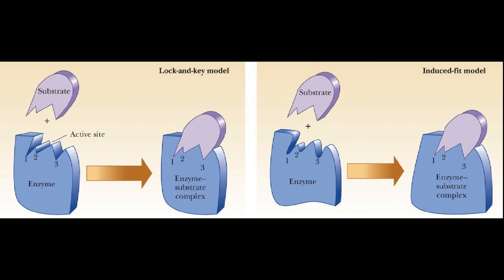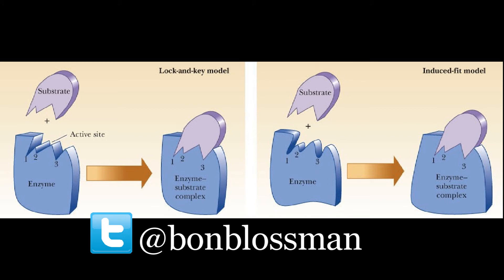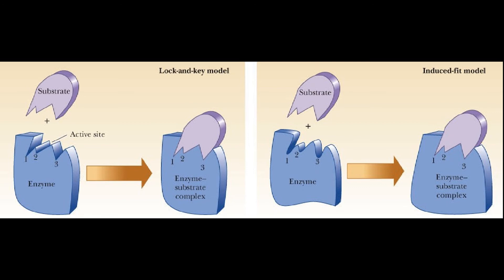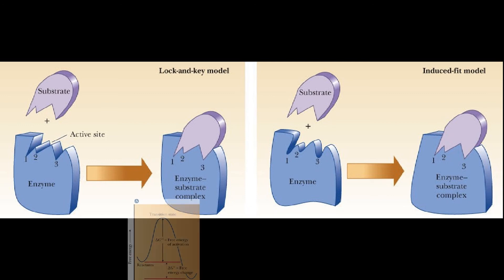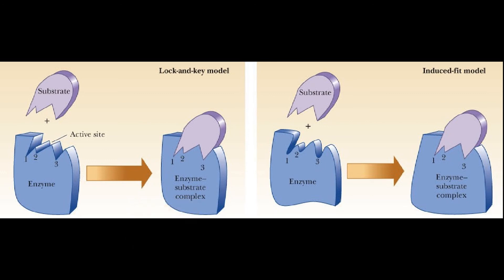The other model is the induced fit model. The enzyme is more flexible — it's not rigid, which makes sense because we think of our proteins as being flexible. The enzyme and the active site change shape to bind the substrate. That's why it's called induced fit — it's like if you shake hands with someone, your hands don't immediately fit perfectly, but you both tighten and make them fit more perfectly. It has a higher range of specificity with this model, so you're going to get an enzyme catalyzing more substrates. When you change shape, you can improve catalysis.